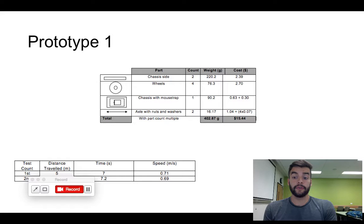So for the first prototype, we created this first mousetrap car with the parts that were given to us in the first workshop. And it actually worked. It was 400 grams and it cost $15 and our quickest time was seven seconds. That was not our expected time.